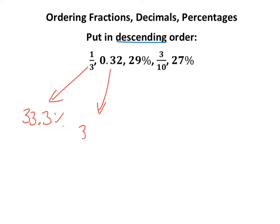Alright, 0.32 is 32%. 29% is already in percent, so that's good. 3 tenths, 30%. And 27% is already as a percentage.